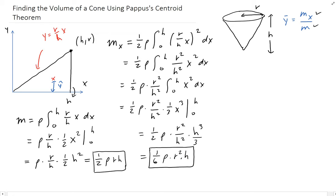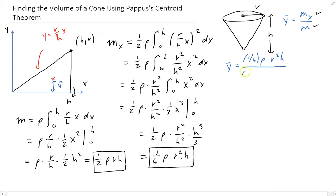Now we can find y-bar. Y-bar equals one-sixth rho times r squared h divided by the total mass, which is one-half rho times r times h. So that's one-sixth divided by one-half, which gives us one-third. The rho terms cancel out, as expected, and the h terms cancel out. That leaves us with y-bar equals one-third r.